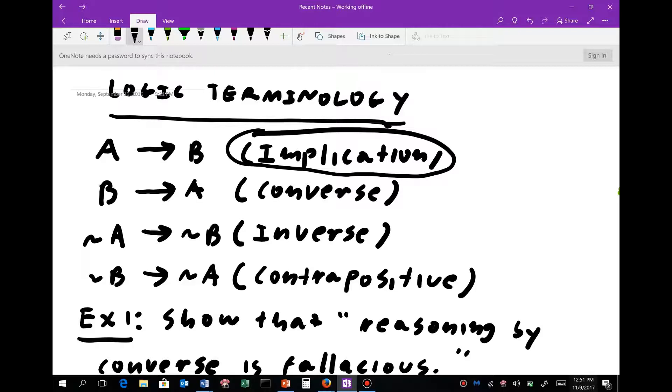Relative to this implication, we have three other terms used in logic very often. We have the converse, which is B implies A, the inverse, which is not A implies not B, and the contrapositive, which is not B implies not A.